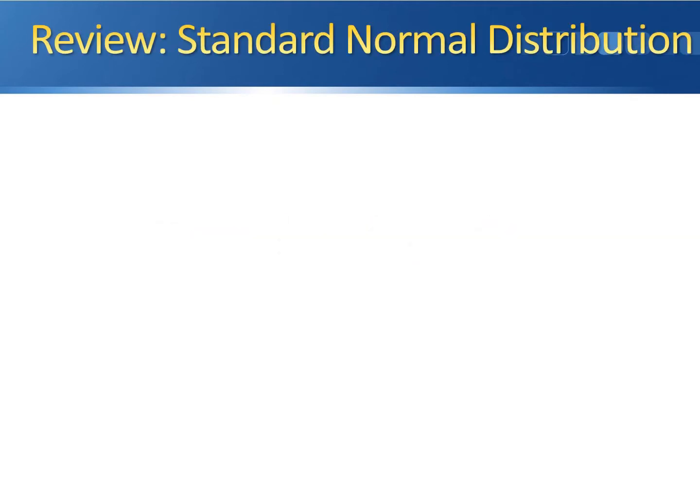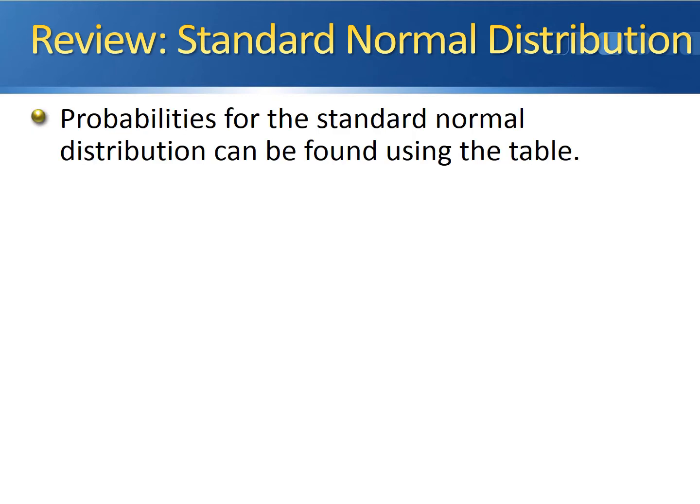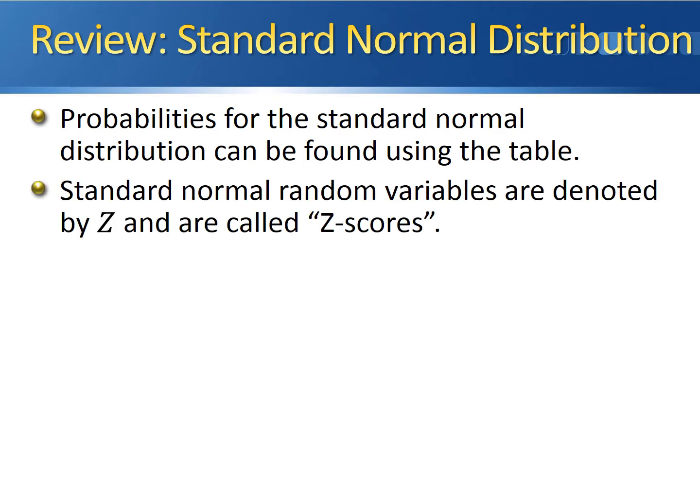I want to remind you of a couple of things we talked about with the standard normal distribution last class. Probabilities for the standard normal distribution are calculated using a table. Standard normal random variables are denoted by the capital letter Z, and they're called Z-scores or Z-statistics.